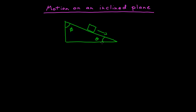So I have an inclined plane resting on the ground, and the incline makes an angle theta with respect to the ground. The wedge itself forms a right triangle, and so this angle theta plus this other angle phi is also equal to 90 degrees.